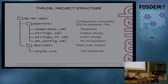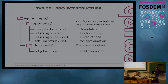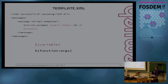The typical project structure has a main directory with your app resources — things like configuration, template files, SQLite databases, and internationalization files. For example, you'll have a template.xml for templates, strings.xml and strings_nl.xml for English and Dutch translations, and wt_config.xml for Witty configuration. In the doc root you put all your static web content, like images or style sheets — for example a simple style.css.